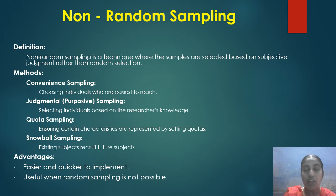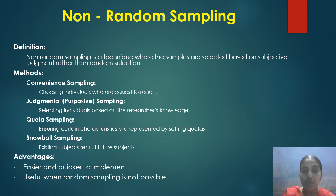Non-random sampling is a technique where samples are selected based on subjective judgment rather than random selection. Methods include: convenience sampling, choosing individuals who are easiest to reach; judgmental sampling, selecting individuals based on the researcher's knowledge; quota sampling, ensuring certain characteristics are represented by setting quotas; and snowball sampling, where existing subjects recruit future subjects. Advantages: it is easier and quicker to implement and useful when random sampling is not possible.